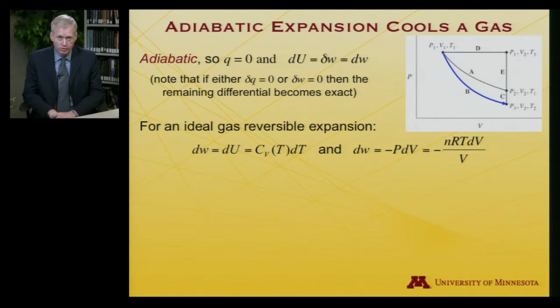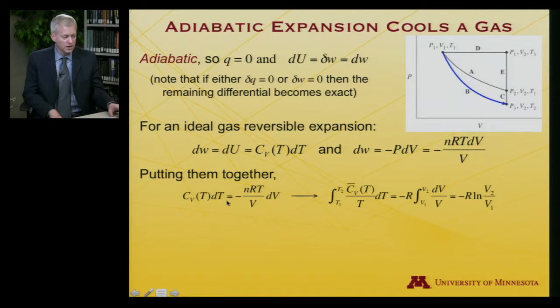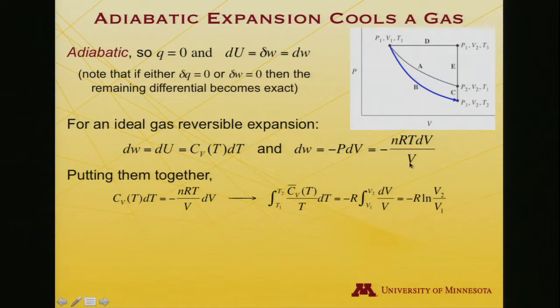So for an ideal gas reversible expansion, it's going to be the case, dW equals dU equals C_V dT. So constant volume heat capacity dT. And we also know that dW is minus P dV. That's the definition of the differential work. It's an ideal gas, so the pressure is minus nRT over V. So if I equate these things, I get that this heat capacity times dT is equal to this dependence on volume dV. Integrate both of those quantities. The one from initial to final temperature, the other from initial to final volume. And so I get that this integral is equal to minus R log V2 over V1.